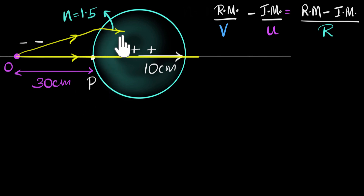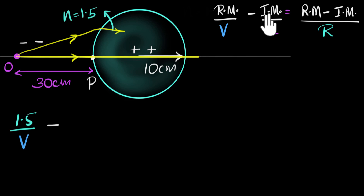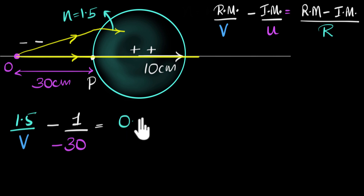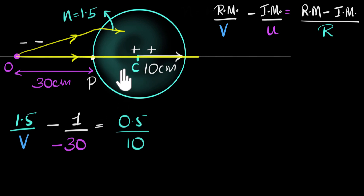Applying the equation: the refracted medium is 1.5, so we have 1.5 over V. The incident medium is air, so that's 1 divided by the object distance. The object is 30 centimeters on the negative side, so negative 30. That equals Rm minus Im, which is 1.5 minus 1 = 0.5, divided by the radius of curvature. The radius is 10 centimeters and the center of curvature is on the positive side, so the radius is positive 10.